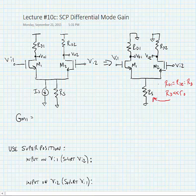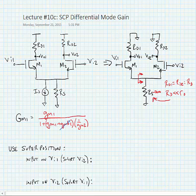If we assume that RS is large and tends towards infinity, then looking from the source of M1 towards M2, we see a 1 over GM2. So the effective GM1 would be equal to GM1 divided by 1 plus GM1 plus GMB1 times 1 over GM2. For the time being we're going to assume that GMB is small, close to zero, which means that the effective GM1 is approximately equal to GM1 divided by 2. By symmetry, the effective GM2 is equal to this as well.